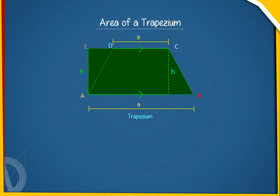In the given figure, ABCD is a trapezium wherein AB and DC are parallel. These two parallel sides are called the bases of the trapezium. The distance between these parallel sides is called the height of the trapezium.